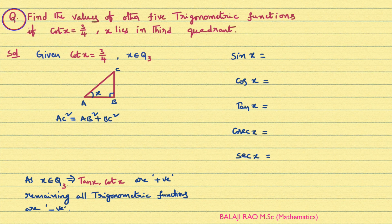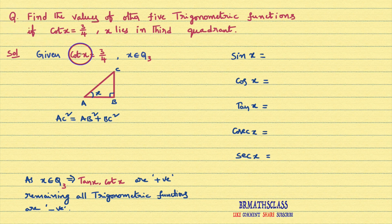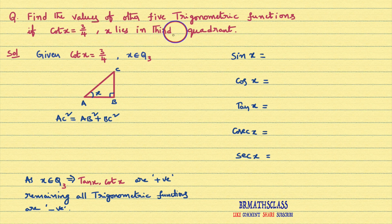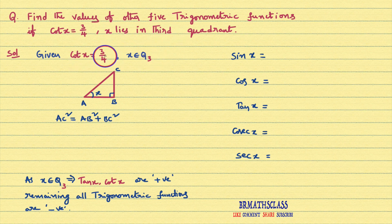Observe this question. Cotangent x is given as 3 by 4 and they are saying that X lies in third quadrant. Given cot x equal to 3 by 4 and X lies in third quadrant.